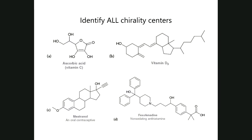You need to be able to look at a structure and identify chirality centers within them. You're looking for tetrahedral atoms — meaning four different things bonded to them, four groups around them — and all four of them have to be different.